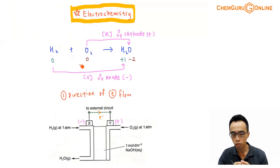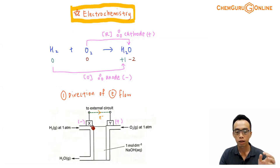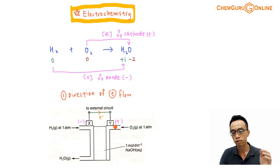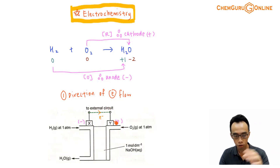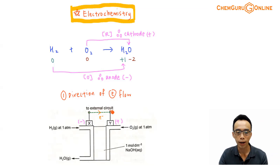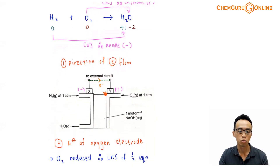All of this we can determine by deduction — we don't need to memorize it. Coming back to the direction of electron flow: we have determined that the electrode at the hydrogen side is the anode, which is negatively charged, so X is negatively charged. The electrode at the O2 side is the cathode, so Y is positively charged. When these two electrodes are connected in an external circuit, electrons flow from the negative electrode to the positive electrode — so electrons flow from X to Y.